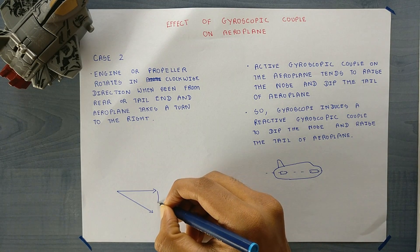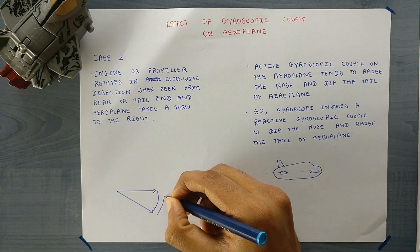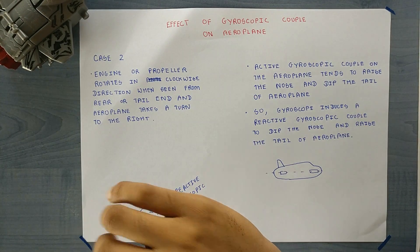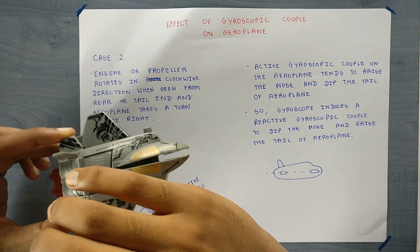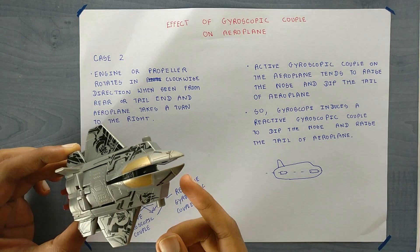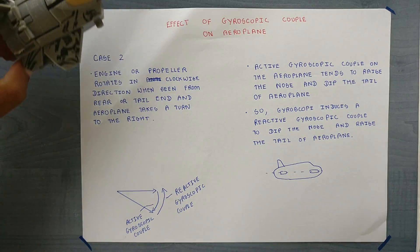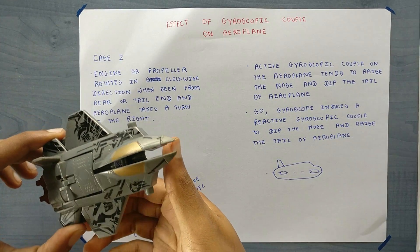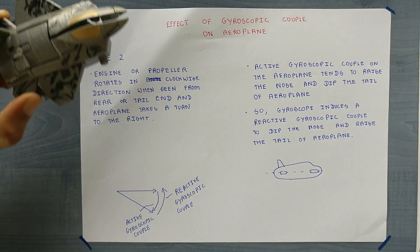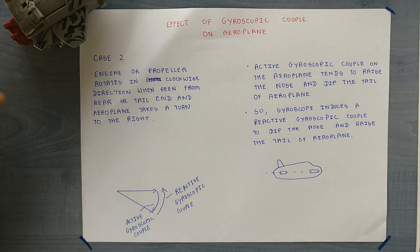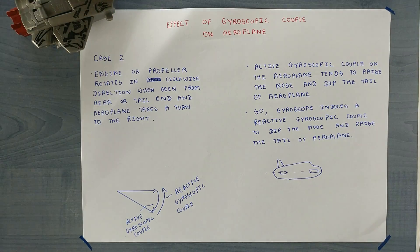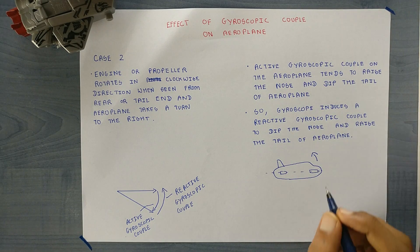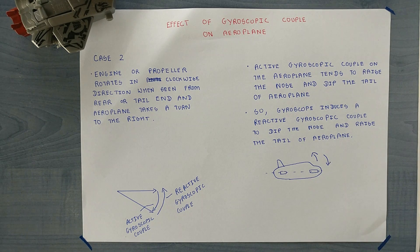So this will be the active gyroscopic couple and this will be the reactive gyroscopic couple. Since the active gyroscopic couple is in this direction, according to the right hand thumb rule, the effect tends to dip the tail of the aeroplane and raise the nose of the aeroplane. Again I have drawn the side view of the aeroplane here — this will be the effect of the active gyroscopic couple and this will be the effect of the reactive gyroscopic couple.